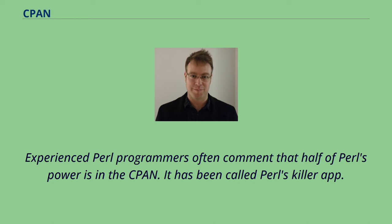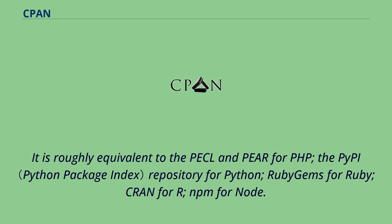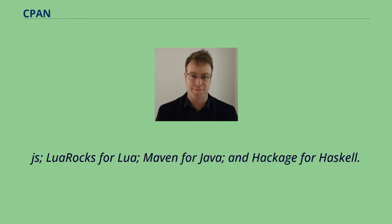Experienced Perl programmers often comment that half of Perl's power is in the CPAN. It has been called Perl's killer app. It is roughly equivalent to the PEAR repository for PHP, the PyPI repository for Python, RubyGems for Ruby, CRAN for R, NPM for Node.js, LuaRocks for Lua, Maven for Java, and Hackage for Haskell.